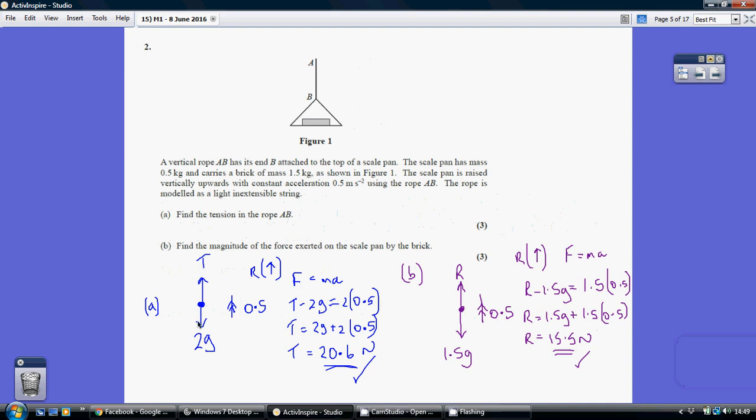So the downward force is going to be 2 times gravity, so 2g, and this is going to have tension going the opposite direction. And we're being told that it's accelerating upwards at 0.5.